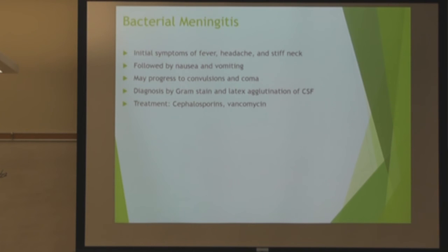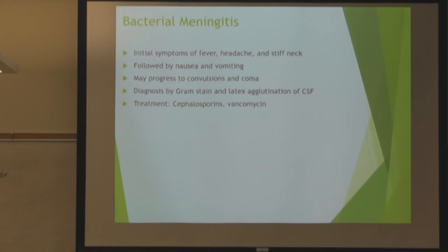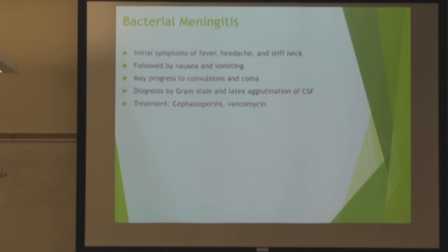For infections of the nervous system, starting with bacterial meningitis — acute meningitis is commonly caused by bacteria, and the three main offenders are Streptococcus pneumoniae, Neisseria meningitidis, and Haemophilus influenzae. Traditional symptoms are fever, headache, and stiff neck — not just any headache, but the worst migraine ever, with photophobia. It can progress to nausea, vomiting, and convulsions. Diagnosis is by Gram stain and latex agglutination of CSF, requiring a lumbar puncture.